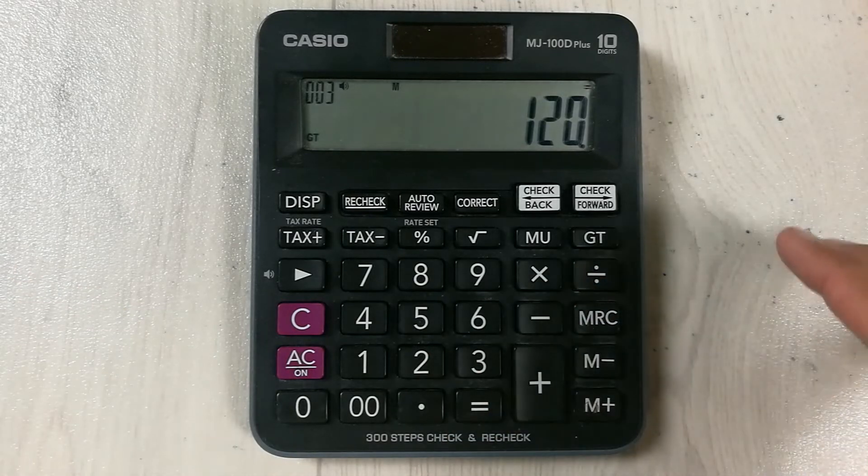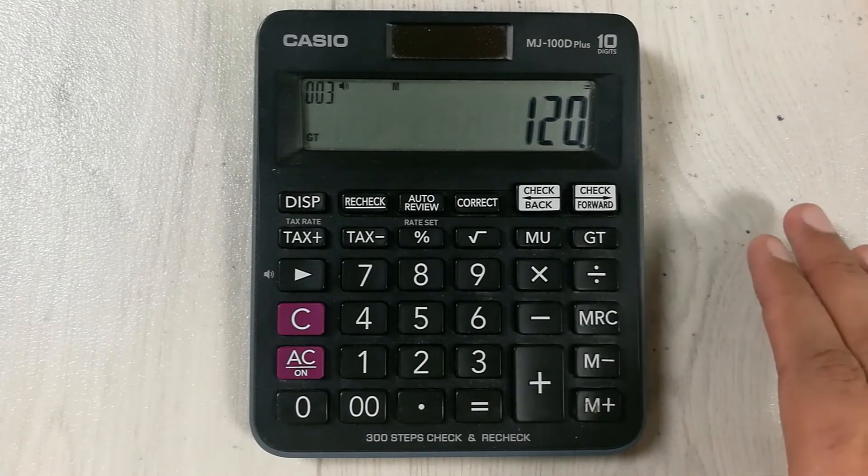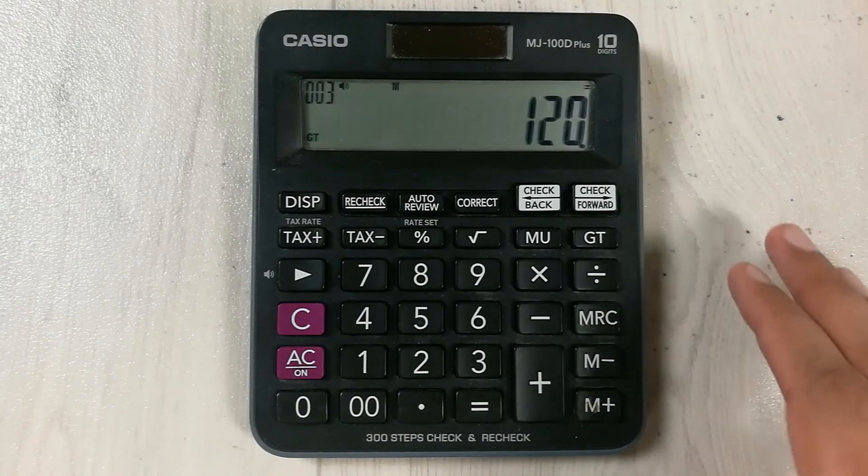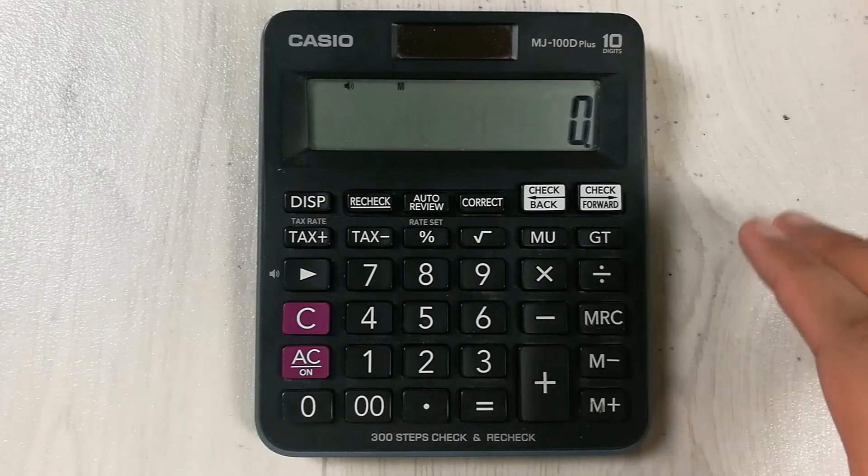So 120 is the price per square foot for that apartment. Let's move to another example.